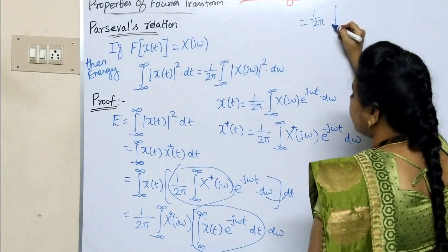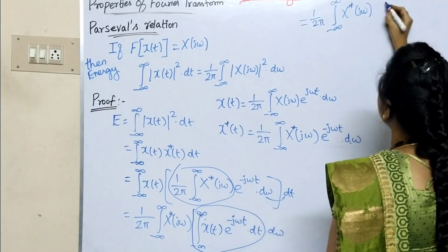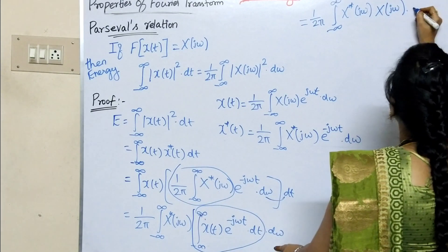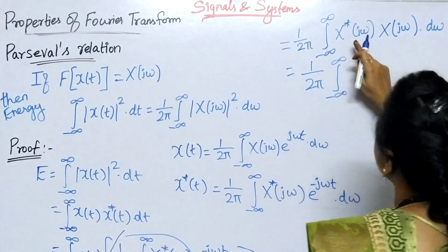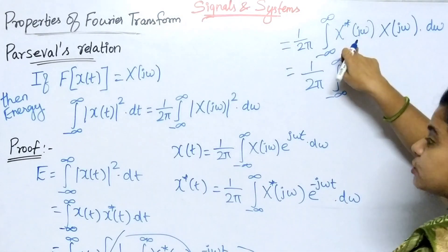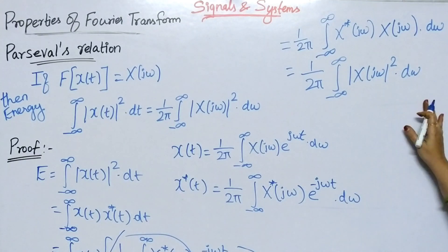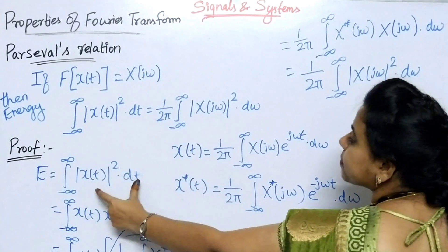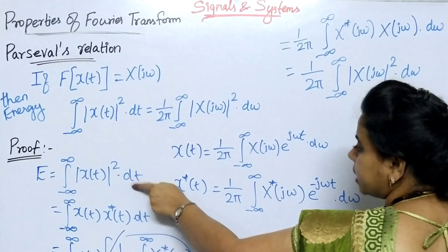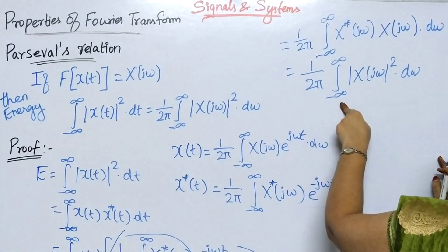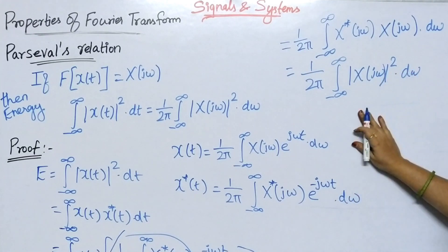Integrating over t, e to the power j omega t into e to the power minus j omega t simplifies, giving from minus infinity to infinity x of j omega into x of j omega conjugate, which equals modulus of x of j omega whole square into d omega. Hence proved.